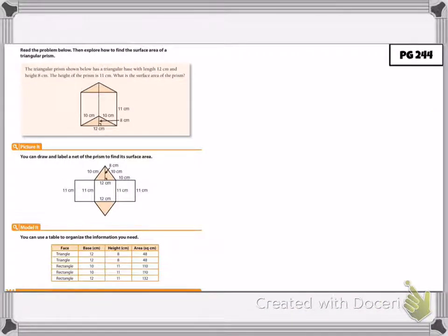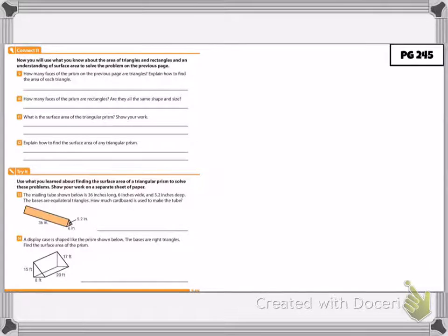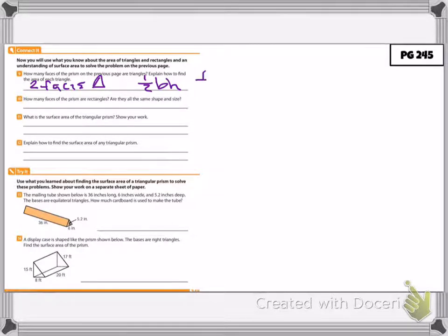On the next page, the triangular prism shown has a triangular base with a length of 12 centimeters and a height of 8 centimeters. The height of the prism is 11 centimeters. We can draw and label our net or use a table to find the surface area. There are two faces that are triangles, and to find the area of each we do one-half base times height: one-half times 12 times 8. Half of 12 is 6, and 6 times 8 equals 48 for one triangle.